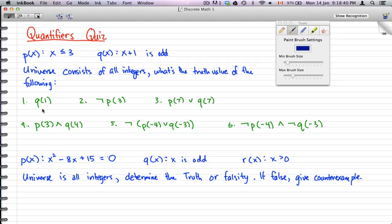For number one, q(1), well we substitute 1 into x. Now 1 plus 1 is 2, and 2 is not odd, so this is false. Now not p(3), so if you put in 3, then 3 is equal to 3, so that means it is true. But remember we negate it, so the answer to this is also false. p(7): 7 is not less than 3, 7 is greater than 3, so this is 0 or false. And q(7), we substitute 7 in for x, 7 plus 1 is odd—no that's not true because 8 is even, so this is also 0. So what we get here is false because 0 or 0 is 0, which is false.